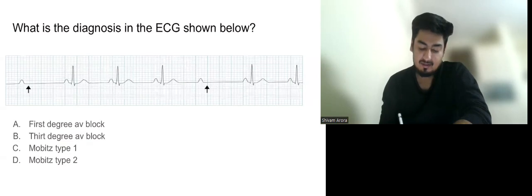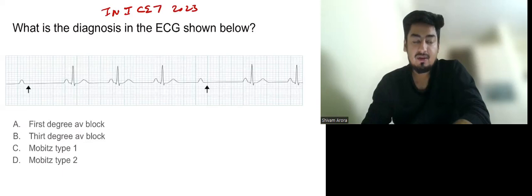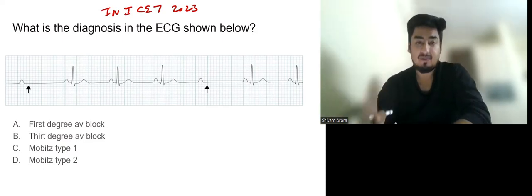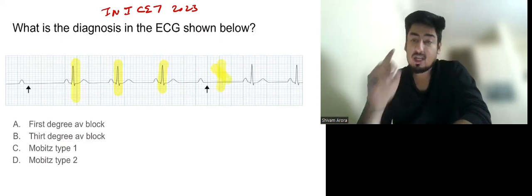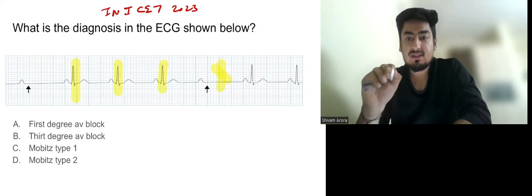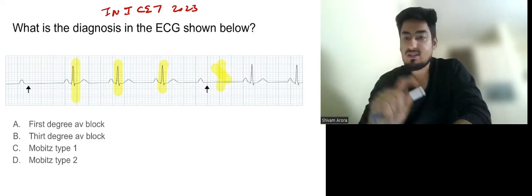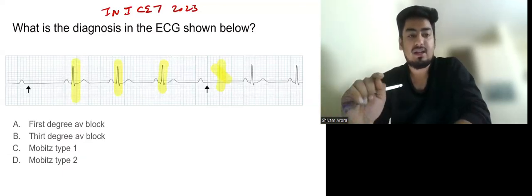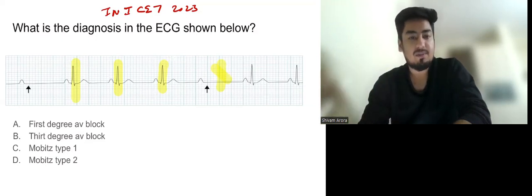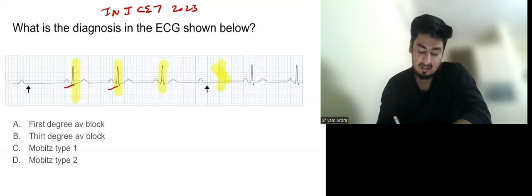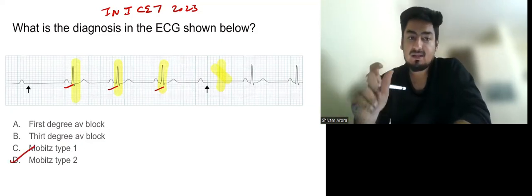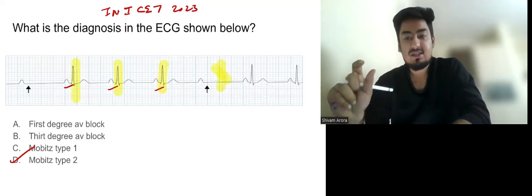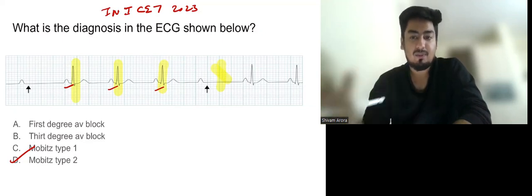The third question also came in INESET 2023. The question asks: what is the diagnosis in the ECG shown? We can see there is a skipped QRS on the ECG. A skipped QRS means second degree AV block — first degree has no skipped QRS, and third degree has no skipped QRS either. In second degree, we look at the PR interval: if the PR interval is constant, it is Mobitz type 2; if the PR interval is progressively increasing until there is a skipped QRS, it is Mobitz type 1.